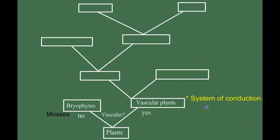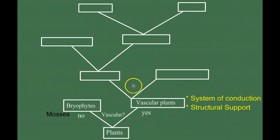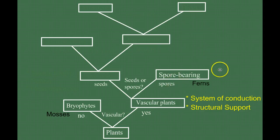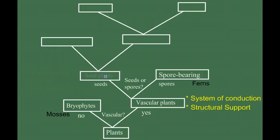Vascular tissue also gives structural support so that plants can grow upwards. The next question we ask is: does the plant release seeds or spores? If the answer is spores, we talked about the spore-bearing or seedless vascular plants, using ferns as our example. Now we're headed down this branch — seeds — the seed plants.